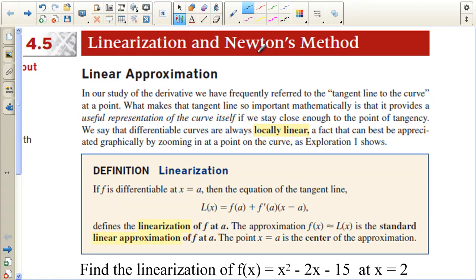This is section 4.5 on linearization and Newton's method. We have what's called a linear approximation to a curve. In our study of the derivative, we have frequently referred to the tangent line to the curve at a point. What makes that tangent line so important mathematically is that it provides a useful representation of the curve itself. If we stay close enough to the point of tangency, we say that differentiable curves are always locally linear, a fact that can be best appreciated graphically by zooming in at a point on the curve as exploration 1 shows.